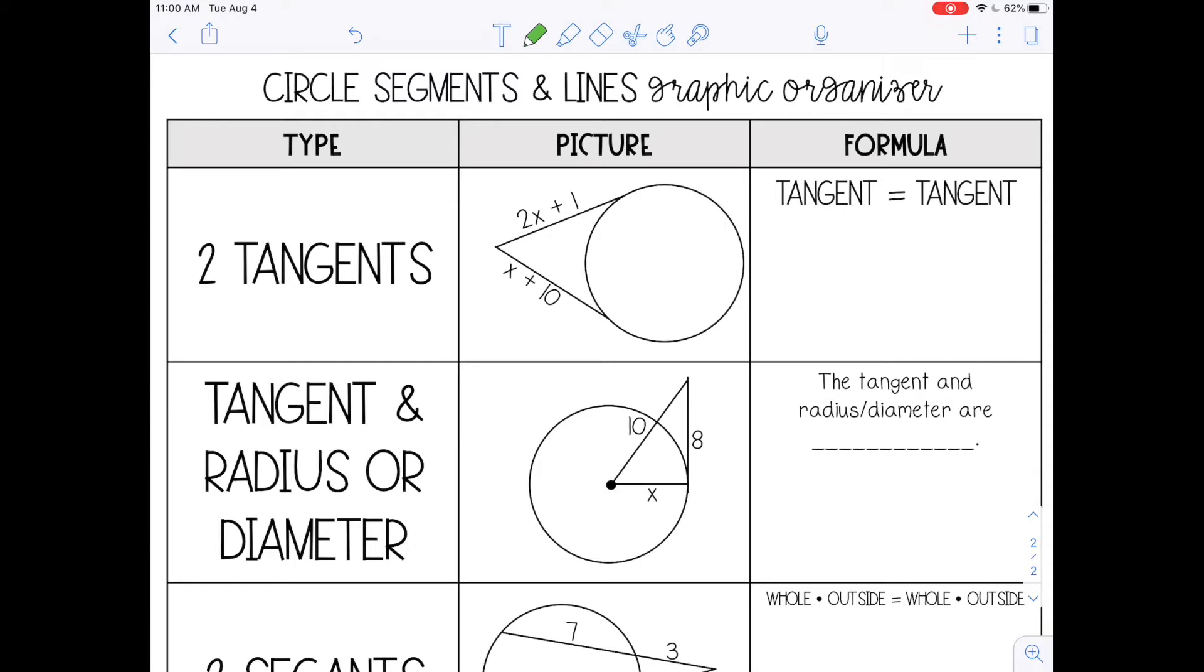The first theorem is two tangents. When you have two tangent segments that come to the same external point, then the two links are equal. So the formula is tangent equals tangent. If you have expressions that represent the lengths of those tangent segments, you can set them equal to each other. It doesn't matter which one you write first.